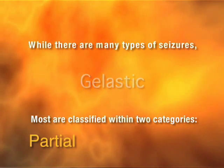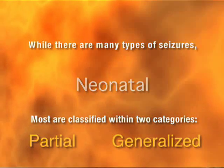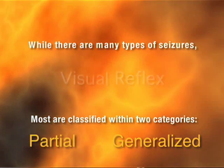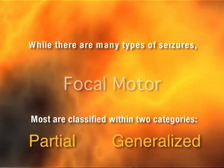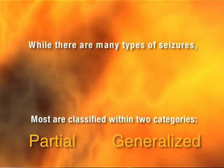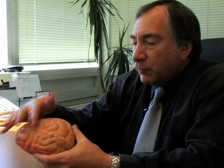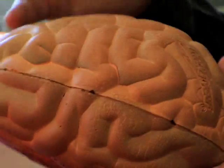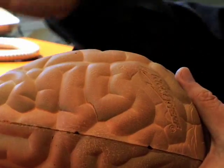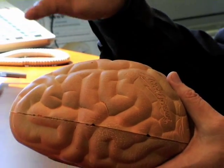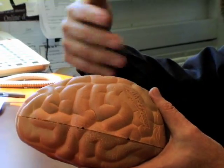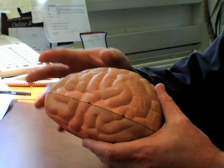The other main seizure type are what are called partial seizures — old terminology, focal seizures — and these are seizures that are arising from a particular part of the brain. For example, this area right here is called the motor strip. So if a seizure were to arise from this area, which is the hand area, you might have some twitching of the hand, the thumb, or individual fingers. Sometimes that twitching can go on for hours or even days.